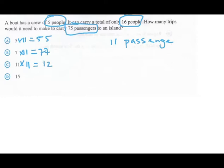Eleven times fifteen will give us one sixty-five. Therefore the closest one to seventy-five would be B, seven. So it will take seven trips to take over seventy-five passengers.